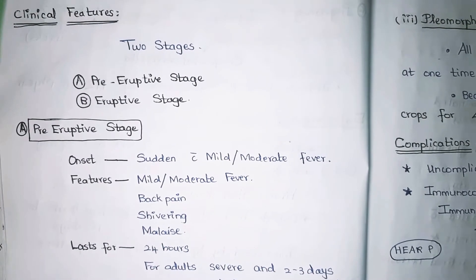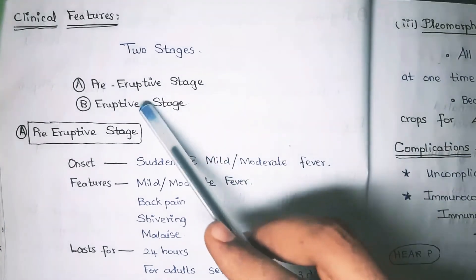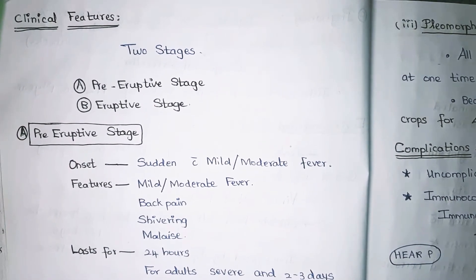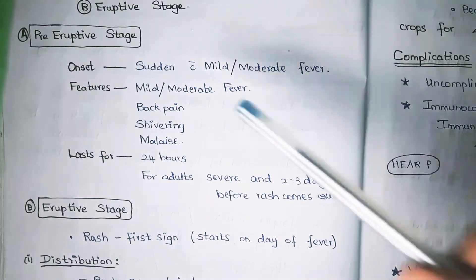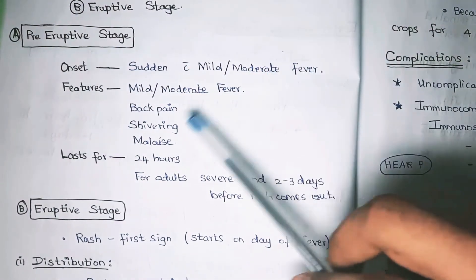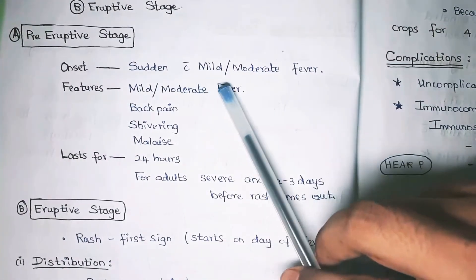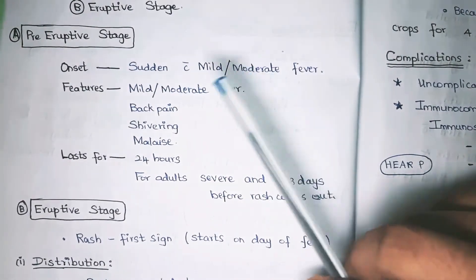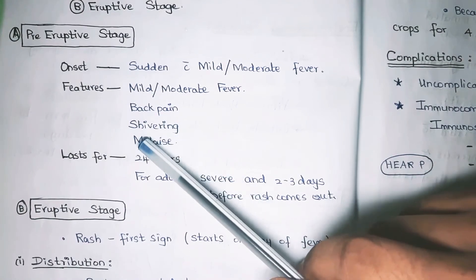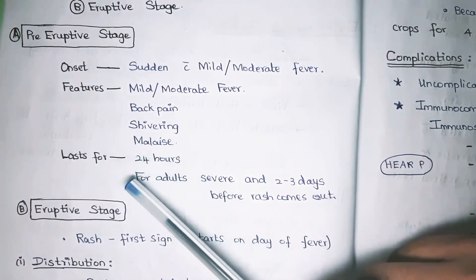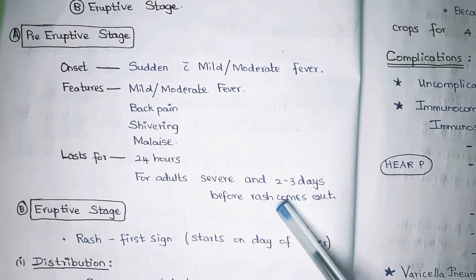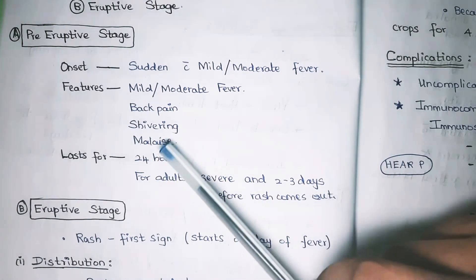Clinical features are classified into two stages: the pre-eruptive stage and the eruptive stage. In the pre-eruptive stage, there is sudden mild or moderate fever along with back pain, shivering, and malaise. This stage lasts for about 24 hours in children, but in adults it is more severe and occurs two to three days before the rash appears.